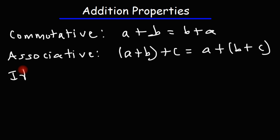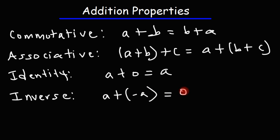Next we have the identity property of addition. And for that it's A plus 0 is equal to A. And finally, the inverse property of addition. That's A plus negative A is equal to 0. So that's it for this video.